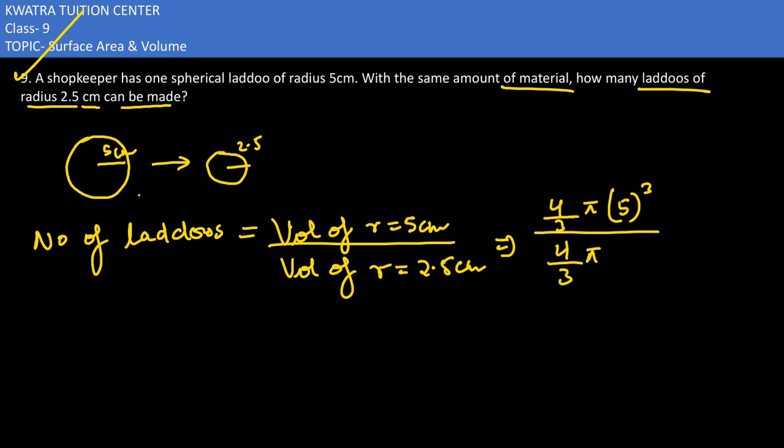Dividing it with 4 by 3 pi, and radius in this situation would be 5 by 2 cube. Now we have 5 cube which is 5 into 5 into 5. 4 by 3 se 4 by 3 cancel, pi se pi cancel. And in division you have 5 by 2 into 5 by 2 into 5 by 2.